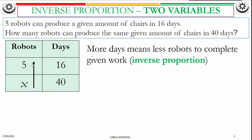Always start with the variable X. So the first one is X over 5. Indirect or inverse means opposite way. So if you are going up for days, you should be going down. So that would be equal to 16 over 40. Be careful with this — don't make it 40 over 16. Indirect is up and down.